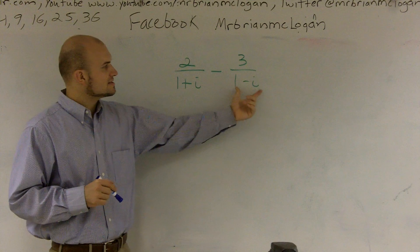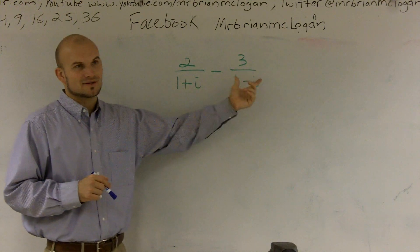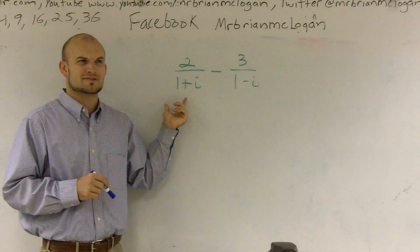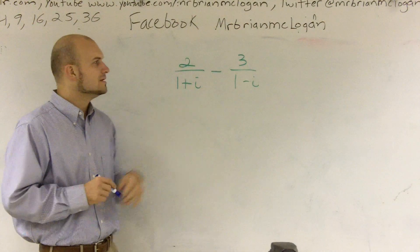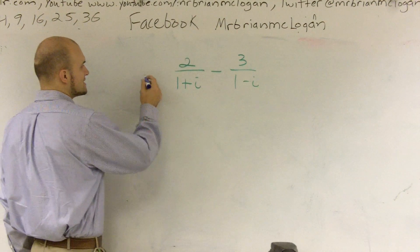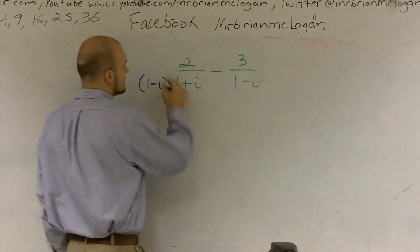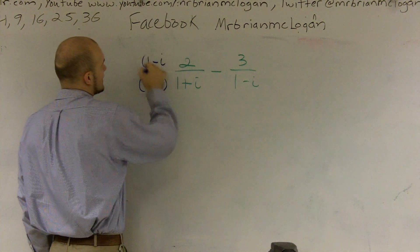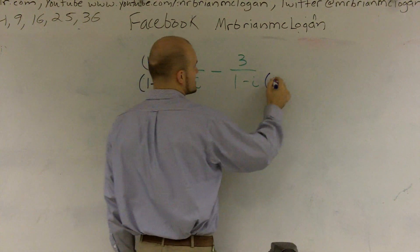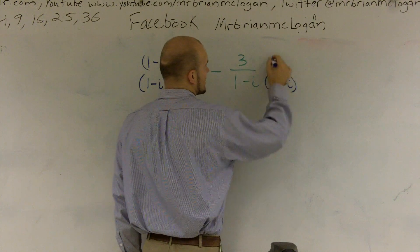So what I can do is these are binomials. They're not really numbers. So it's a little bit difficult to figure out what is the least common multiple. Well, one thing I know I can do is I can multiply by 1 minus i on the top and bottom, and then 1 plus i over here.